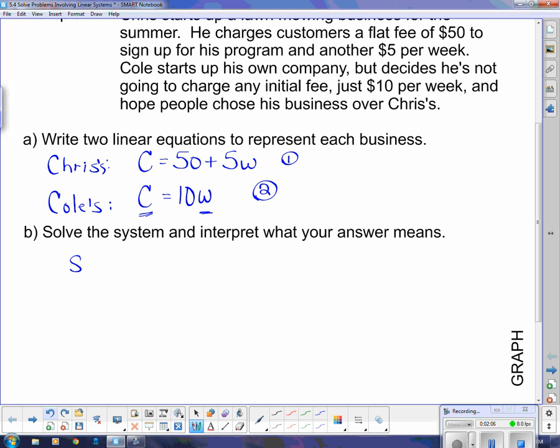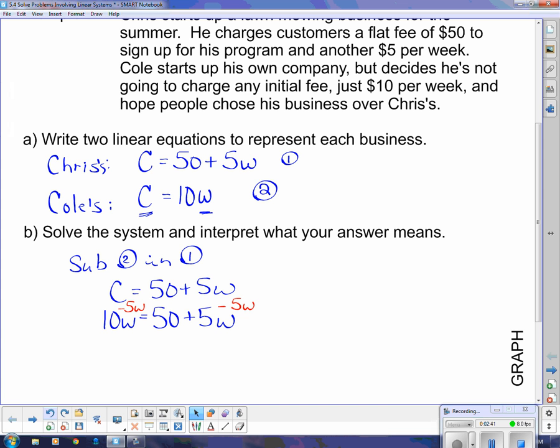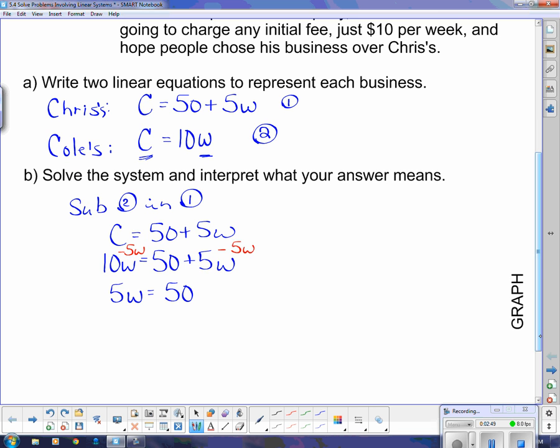So now I'm going to say sub 2 into equation 1. Now, of course, equation 1 said C equals 50 plus 5W. But I know that C is 10W. So I'm going to stick it in. And now I have to solve. So I need a home of the variable and a home of the constant. This side already has just variables, so let that be our variable side. So I need to get the variables off of this side and subtract 5W on both sides. So this side becomes 5W and this side is 50. Now I have to divide both sides by, sorry, not by W, by 5, because this 5 is multiplying the W. So to get rid of it, I divide both sides by 5.